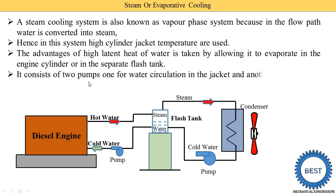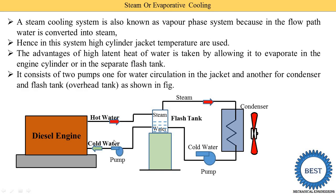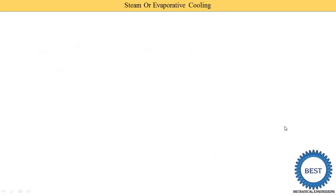This system consists of two pumps, as you can see in the image. One pump circulates water through the jacket, and the other serves the condenser and the flash tank — also known as the overhead tank as shown in the figure.